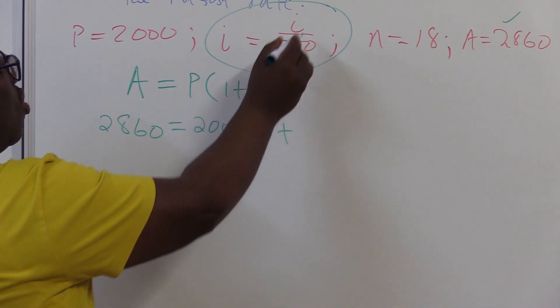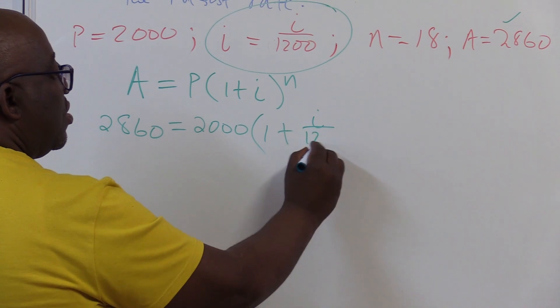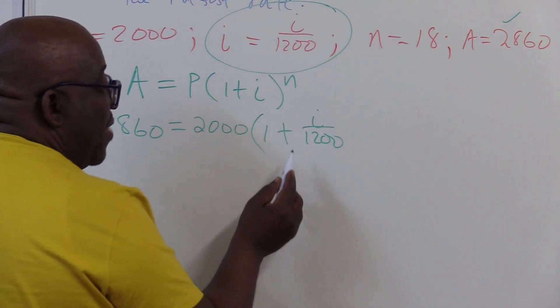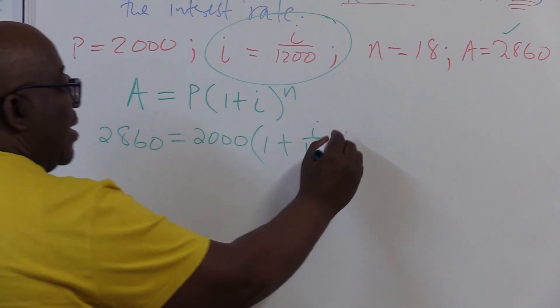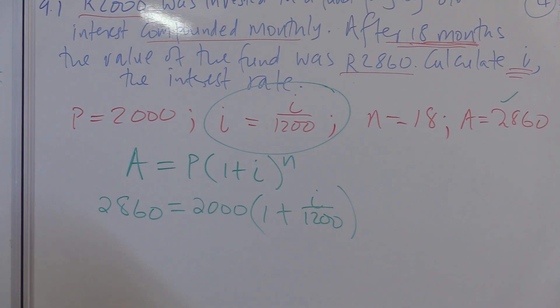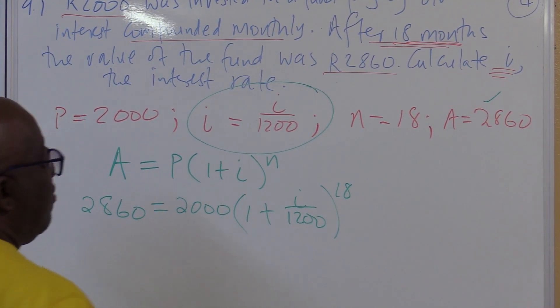Into 1 plus, do I know my I? No, that's what I'm looking for. It is I over 1200. Remember the 100 was for the percentage and the 12 was for compounded monthly, raised to the power N. Do I know my N? Yes, it is already in months. I don't have to multiply it by 12. It is in this particular case 18.